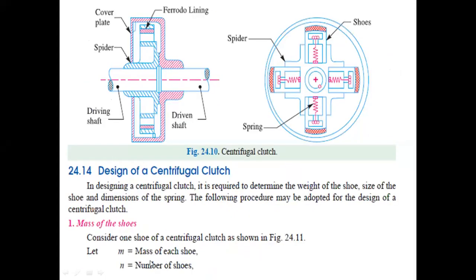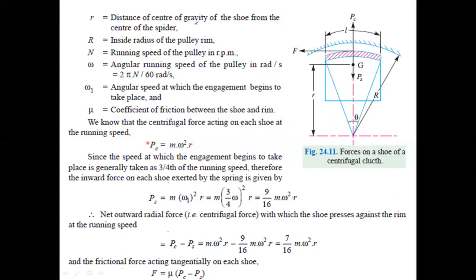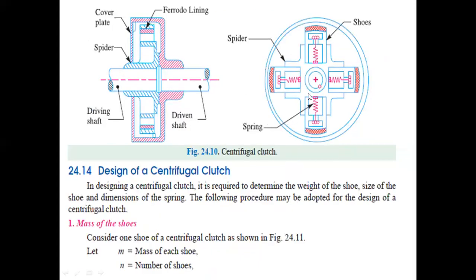In designing a centrifugal clutch, m is the mass of each shoe, and n is the number of shoes. It is required to determine the weight of the shoe, the size of the shoe, and the spring dimensions. R lowercase is the distance of the center of gravity of the shoe from the center of the spider, and R uppercase is the inside radius of the pulley rim.